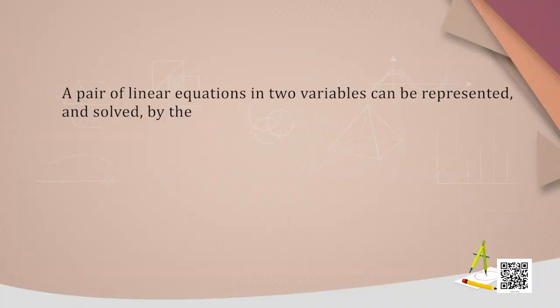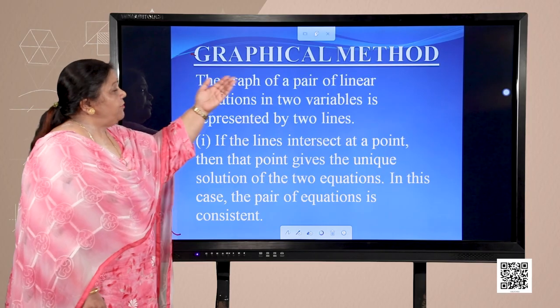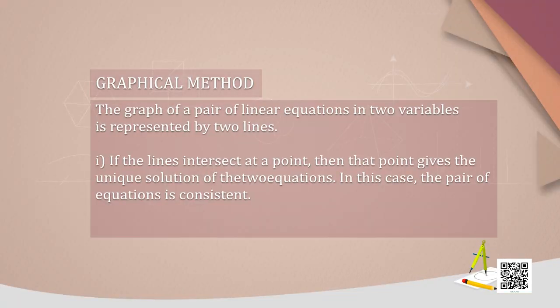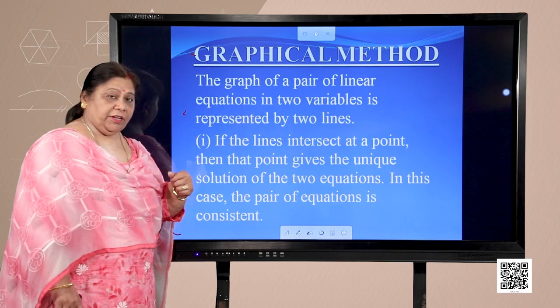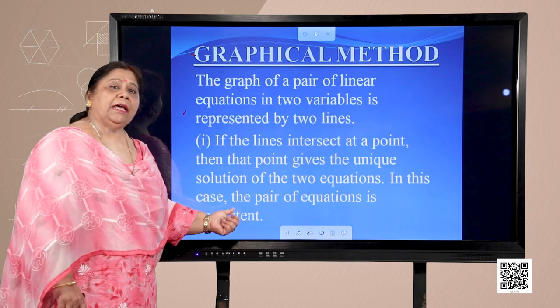A pair of linear equations in two variables can be represented and solved by the graphical method and algebraic method. In the graphical method, the graph of a pair of linear equations in two variables is represented by two lines. If the lines intersect at a point, that point gives the unique solution of the two equations. In this case, the pair of linear equations is said to be consistent.